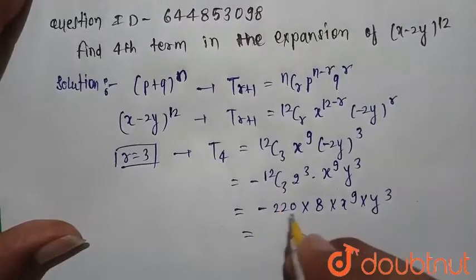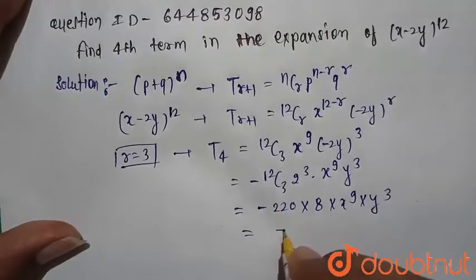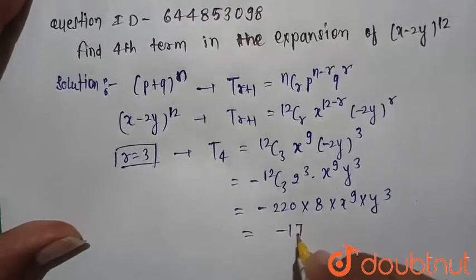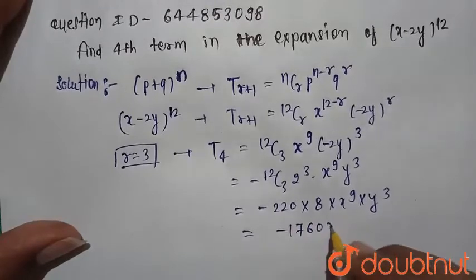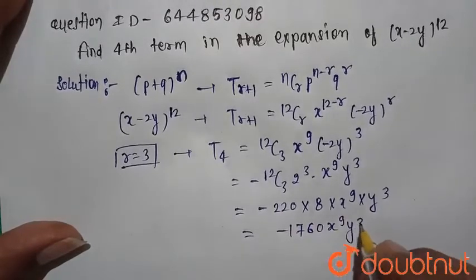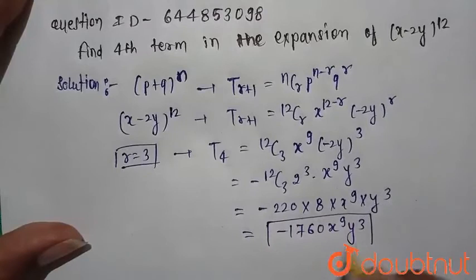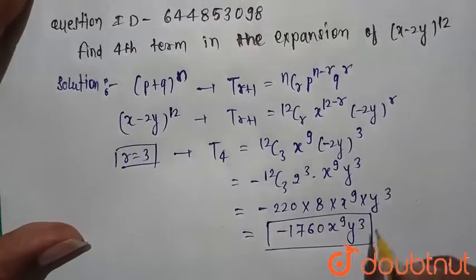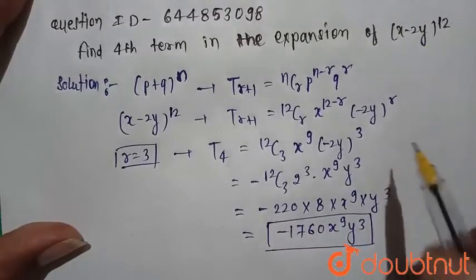The fourth term of the expansion is minus 1760 x raised to power 9 and y raised to power 3. This is our fourth term of the expansion of (x minus 2y) raised to power 12.